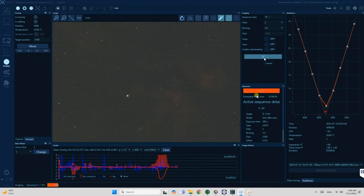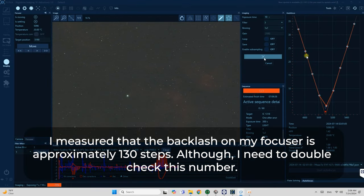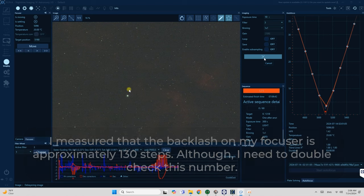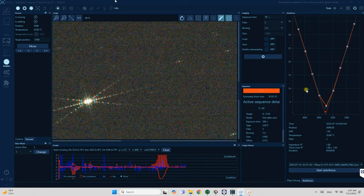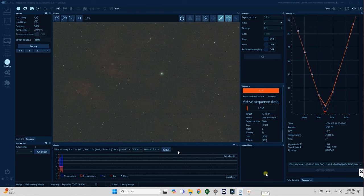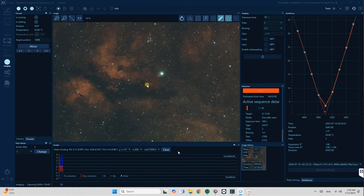So with the backlash compensation applied, the parabola graph on the autofocus sequence looked much better. And I did a test exposure with the Bahtinov mask. On the screen, you can see an image captured using a Bahtinov mask after the finished autofocus sequence that was completed with backlash compensation applied. So yeah, the image is in focus.